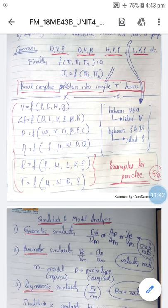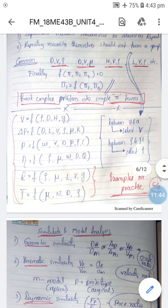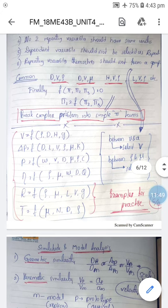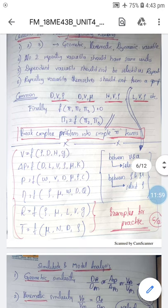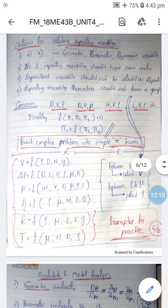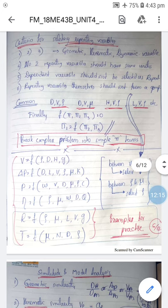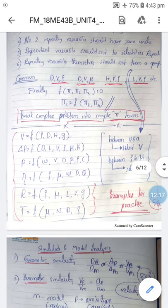When both ρ and μ appear together, select ρ as the repeating variable since it has simpler dimensions — using μ makes the analysis more complex. After selecting repeating and non-repeating variables, apply the principle of dimensional homogeneity to solve for the constants a₁, b₁, c₁ through a₃, b₃, c₃, giving relations for π₁, π₂, π₃. Then write f(π₁, π₂, π₃) = 0, and since π₁ contains the dependent variable, express π₁ as a function of π₂ and π₃.